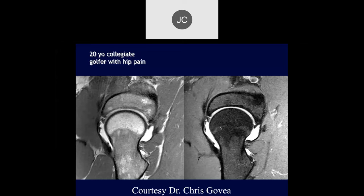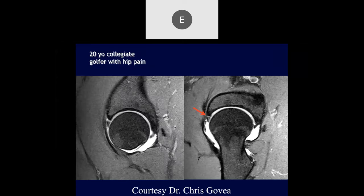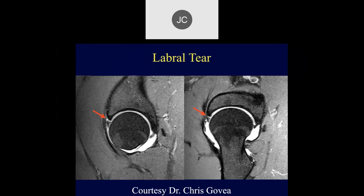20-year-old collegiate golfer with hip pain. This is an arthrogram. Looking at that anterior labrum, I see contrast going through the base — I'd call that a tear. On the sagittal images, we can see it goes to the anterior labrum as well. This was a labral tear.